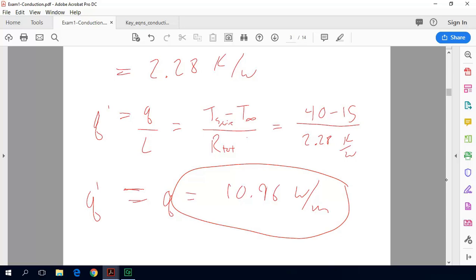And again to relate, q prime is just equal to q divided by L. So we would just divide by our 1 meter which gives us the same numerical answer.